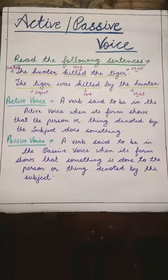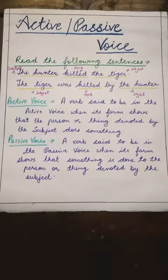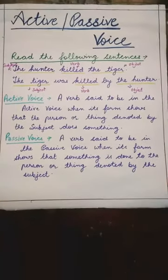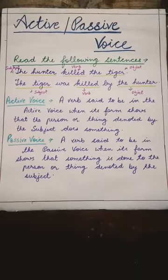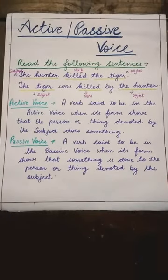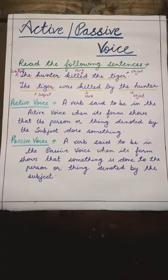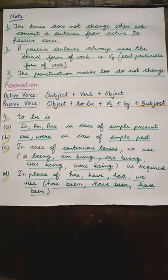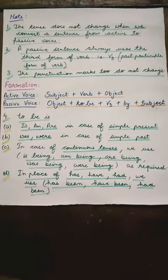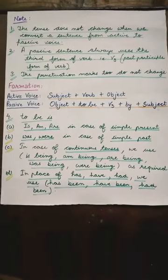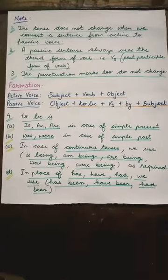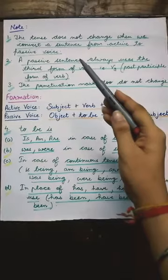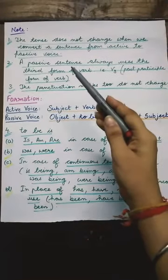So students, in active and passive voice, we just interchange the position of subject and object in our sentences. It means when we change the active into passive, our subject becomes object and object becomes subject. Now there are some points that you need to keep in mind while changing the sentence from active to passive voice. Point number one: the tense does not change when we convert a sentence from active to passive voice.